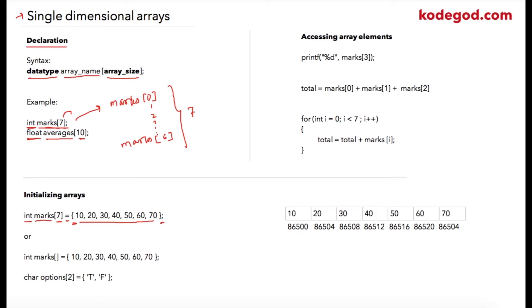Hence, the compiler will allocate 7 memory locations to store these data values. So when these types of declarations are done, then your arrays are stored sequentially like this.